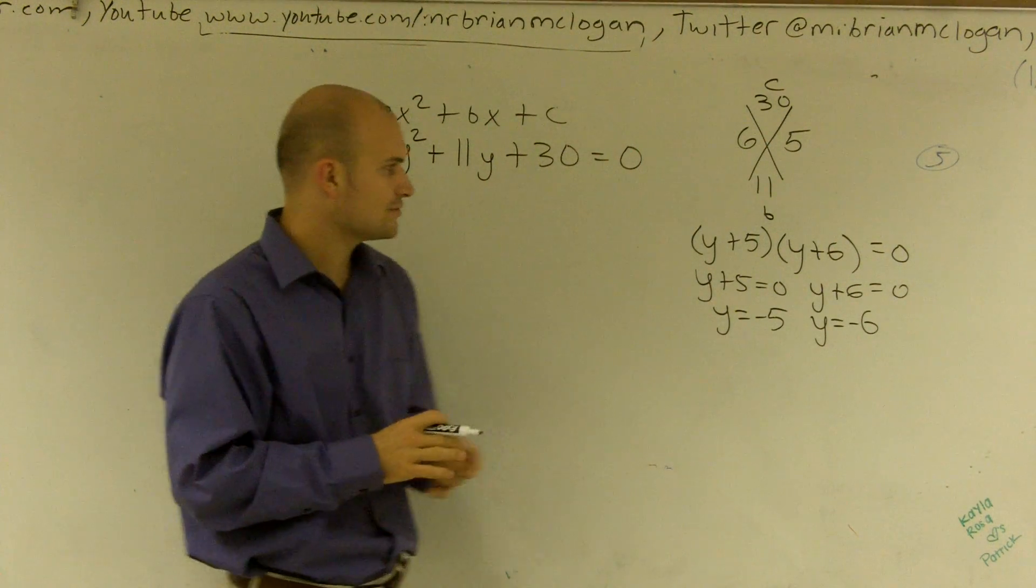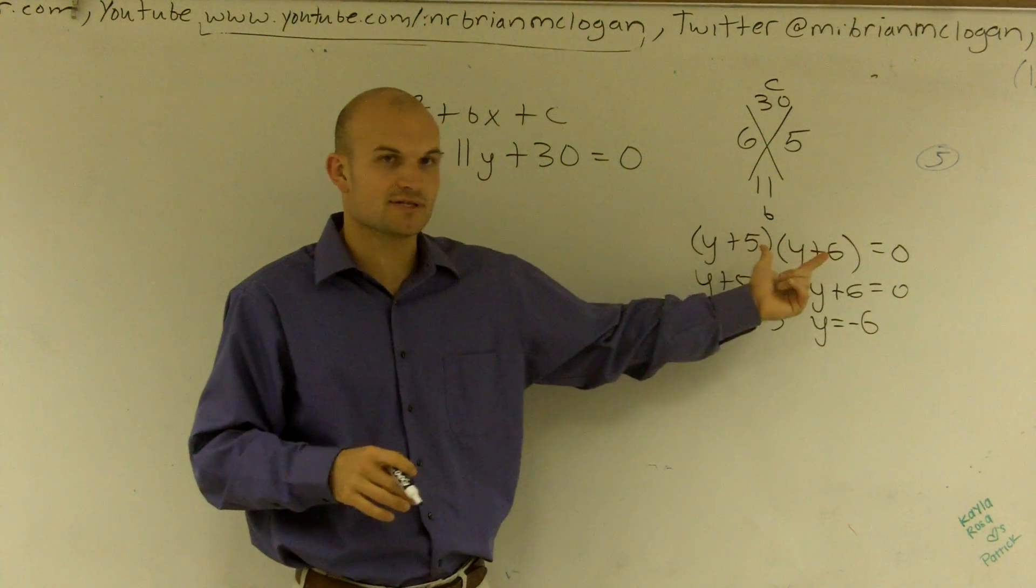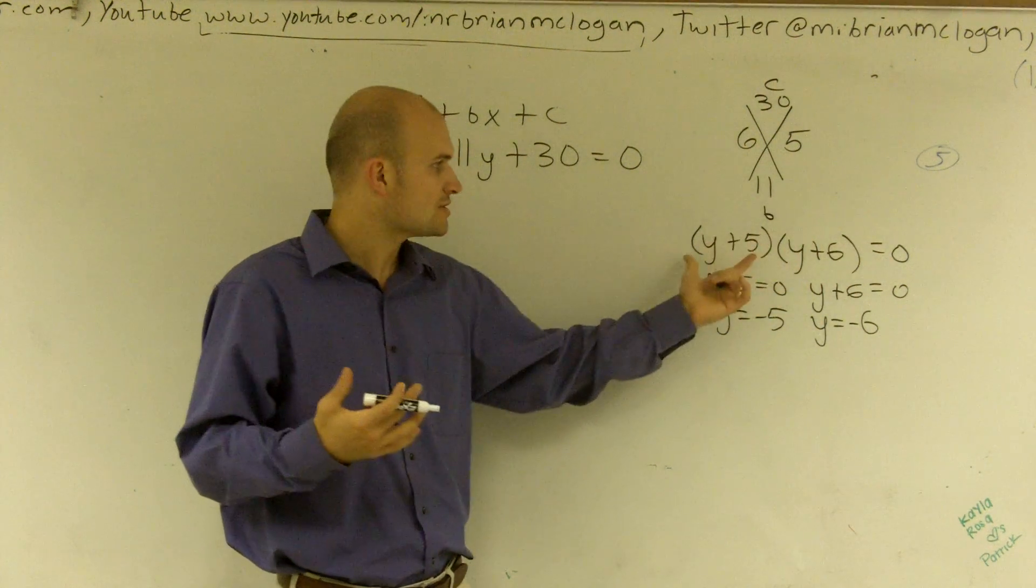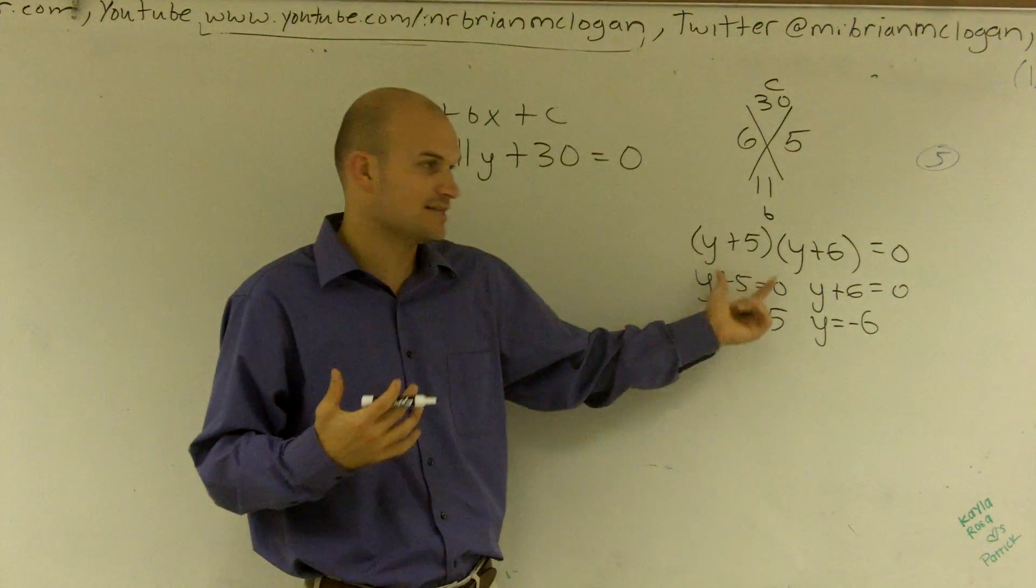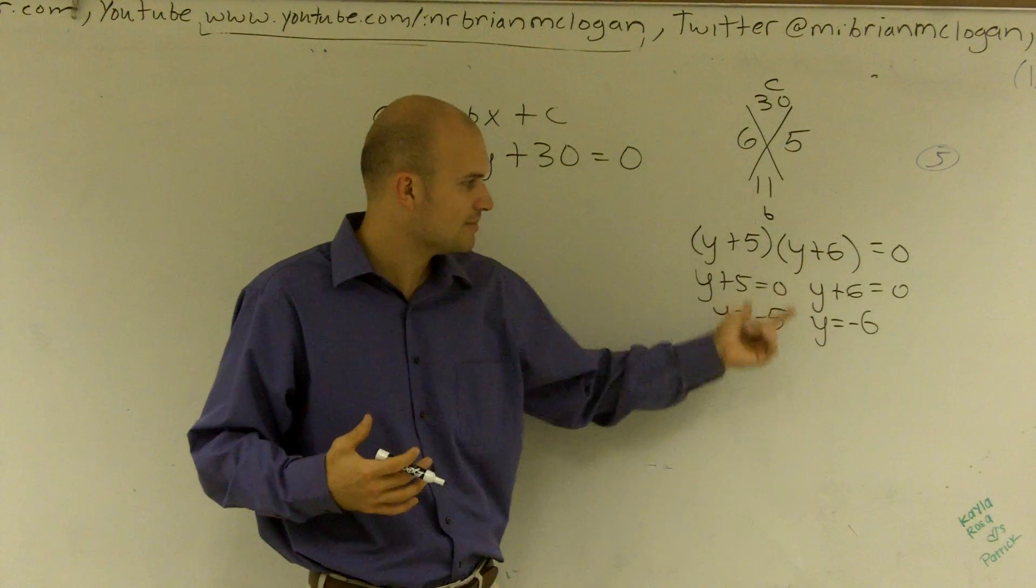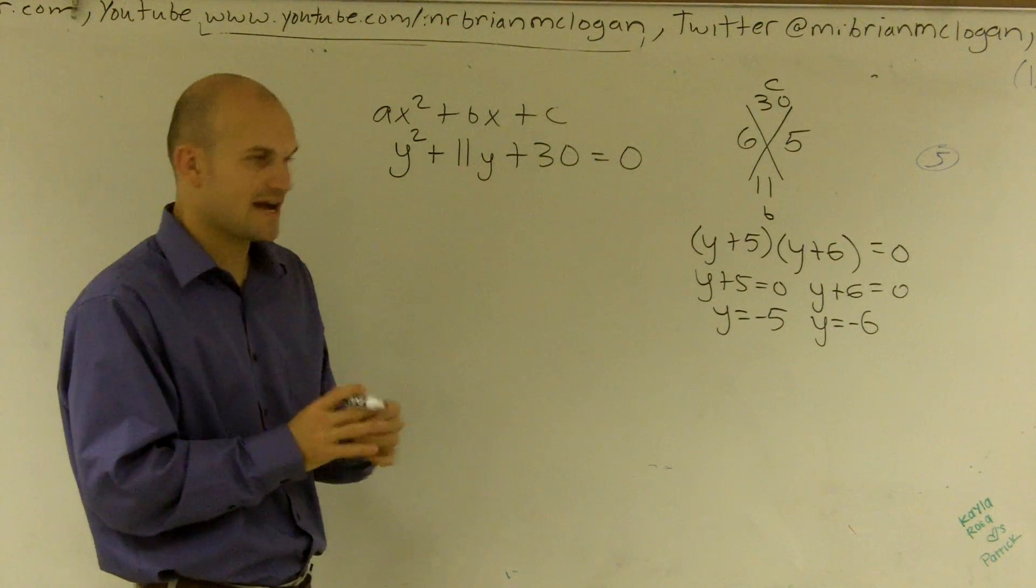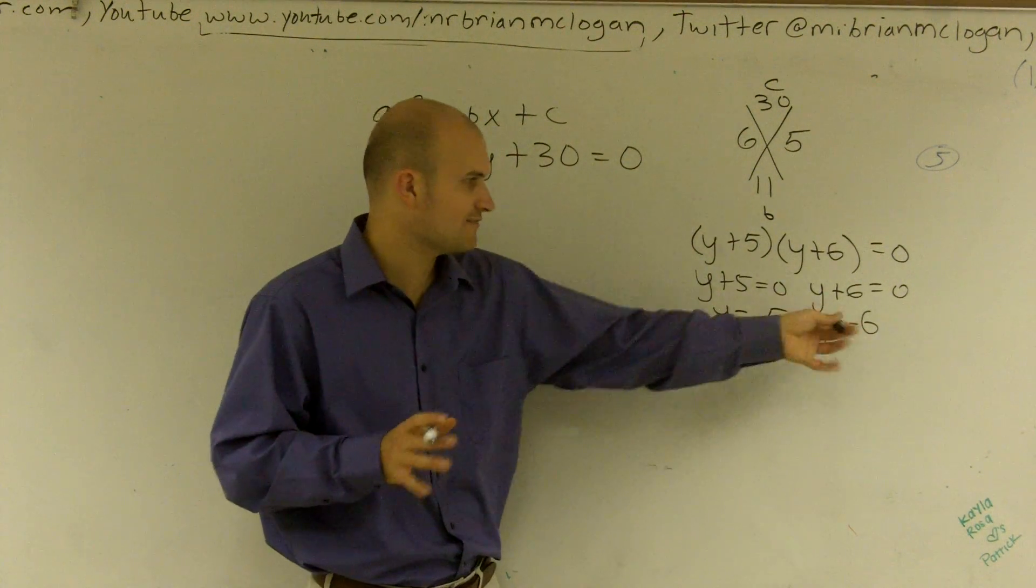And the reason you set them equal to 0 is whenever you have two numbers multiplied to get 0, one of those numbers has to equal 0. So these are really two terms instead of numbers. But one of these terms is going to equal 0, so you set them equal to 0 and you solve. Now, that's how to factor it. So I know my two answers should give me negative 5 and negative 6.